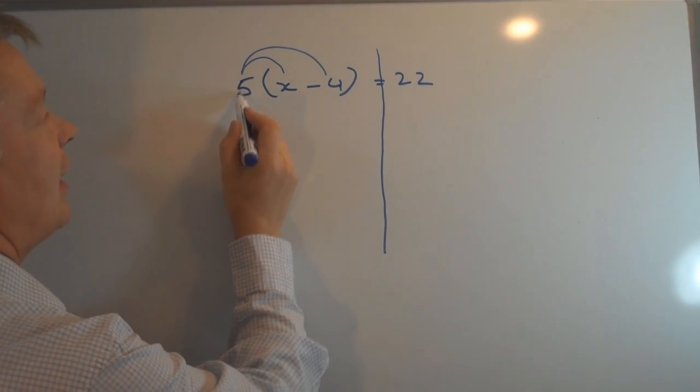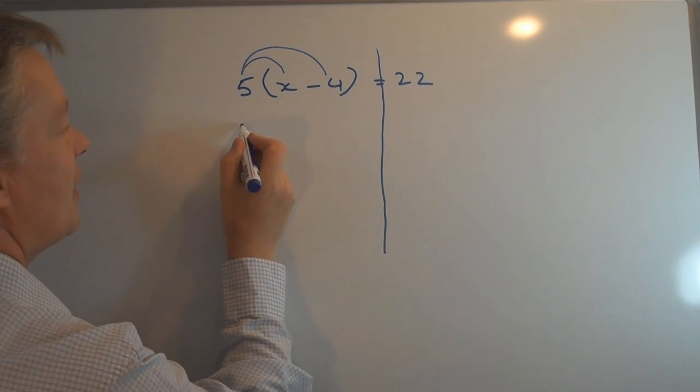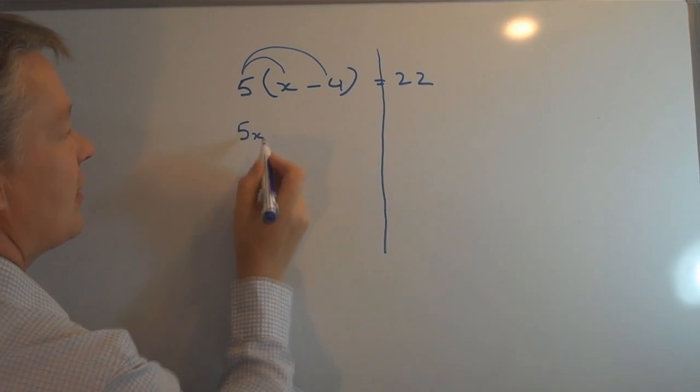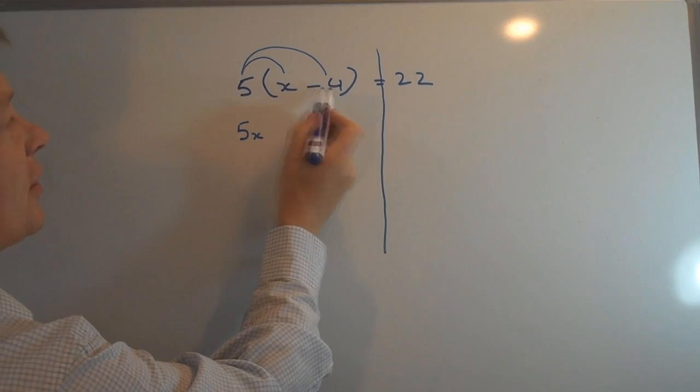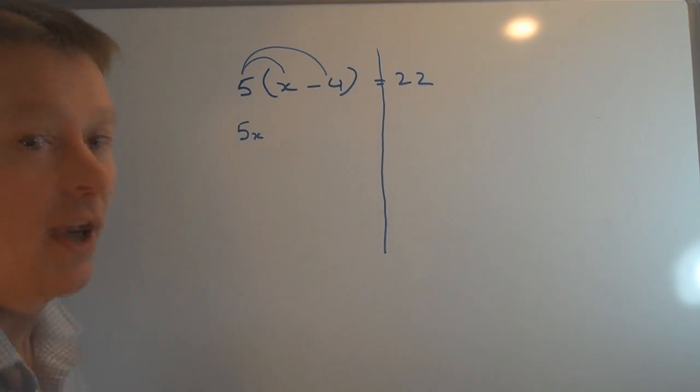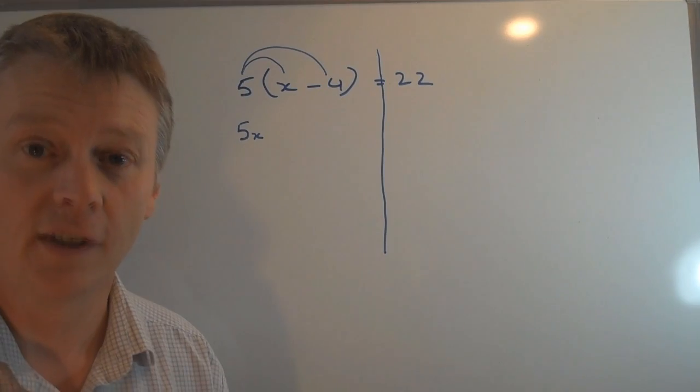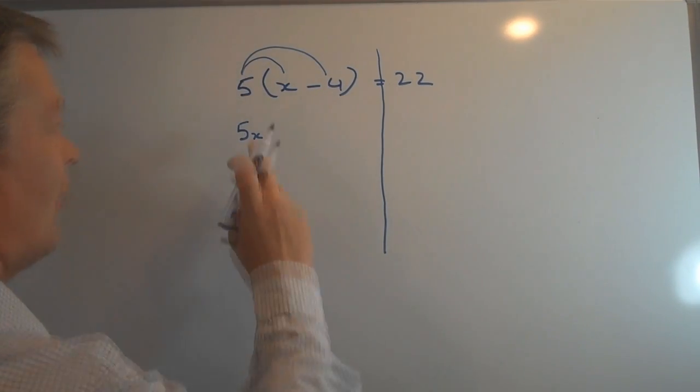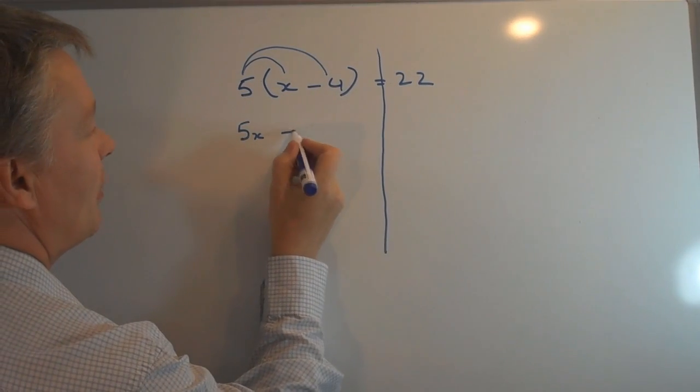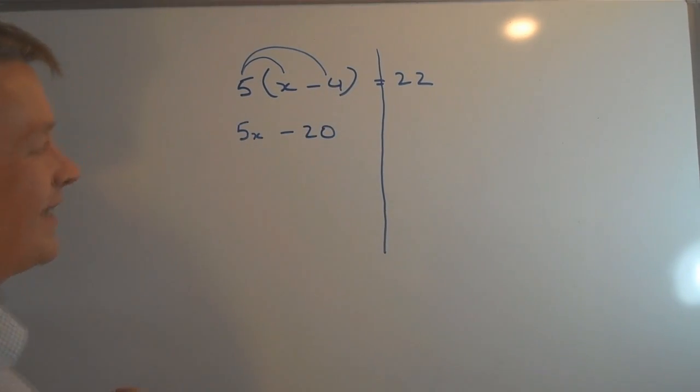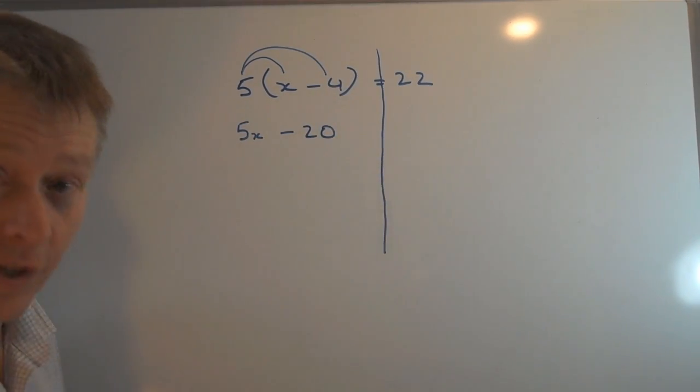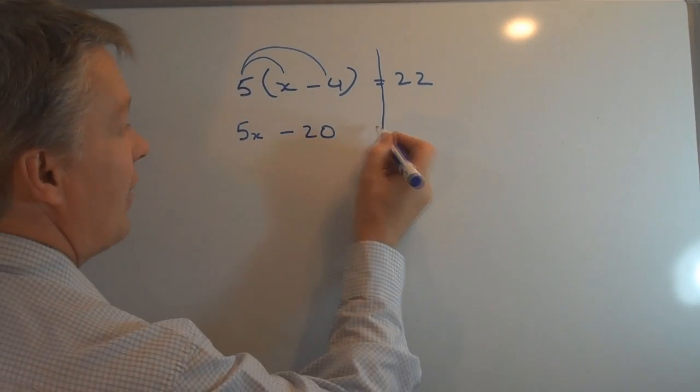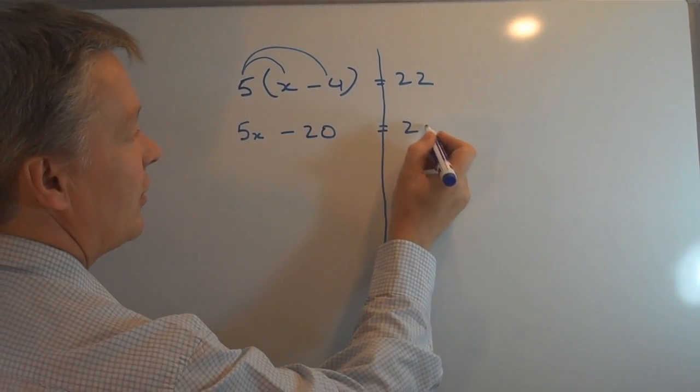Okay, so where we have then is 5 times x is 5x, and then we have minus 4 here. So 5 times minus 4 - it's a positive number that's multiplied by a negative number, so 5 times minus 4 will be minus 20. Nothing changes on the right hand side because everything now still equals 22.